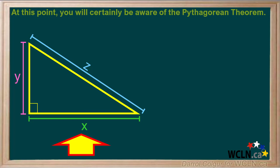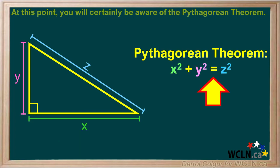Given a right triangle, where x and y are the legs and z is the hypotenuse, the Pythagorean Theorem states that x squared plus y squared equals z squared.